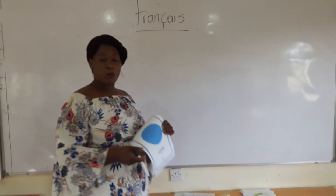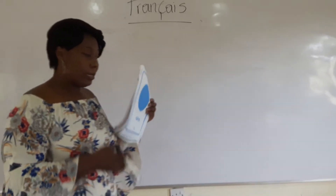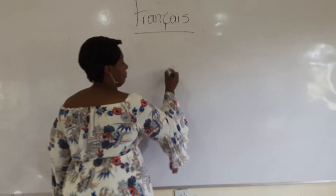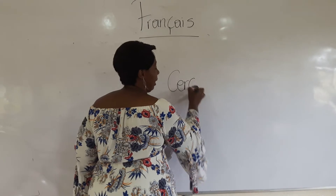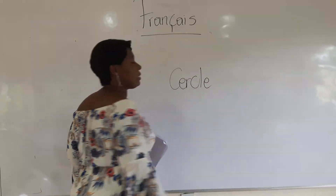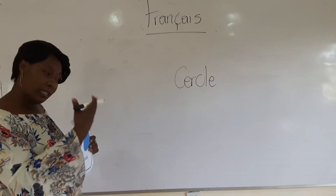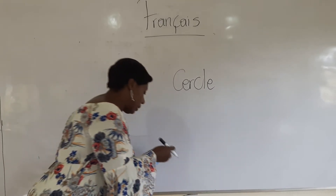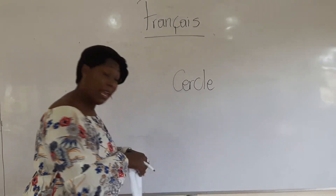Here we have got a circle. A circle in French is cercle. Cercle. This is how we write it — cercle. And let's see what we have next.